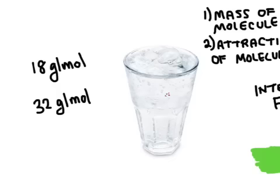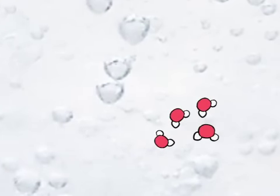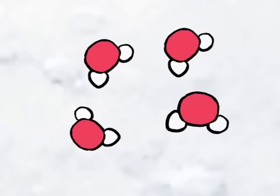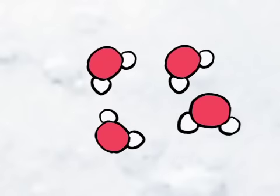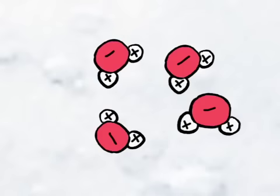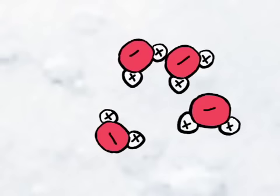So why is water a liquid? It really depends on the attraction of molecules. If we zoom in on some water molecules, we can see what they look like. The red atom is an oxygen atom, and the white ones are hydrogen atoms. Water is a polar molecule, which means the bonds between the atoms are not equal — oxygen has a slightly negative charge, whereas each of the hydrogens has a slightly positive charge. These positive and negative parts attract to each other, and it's strong enough to hold the water molecules close together so that they remain a liquid.